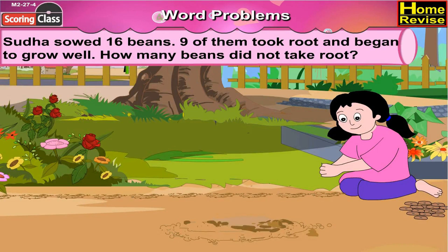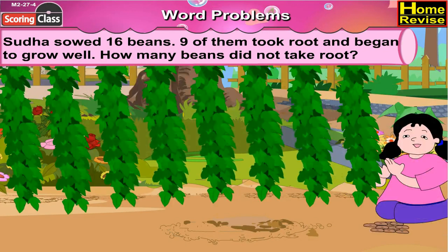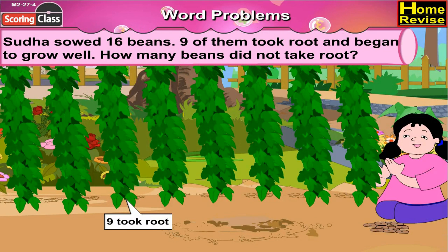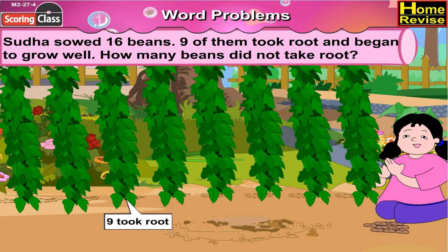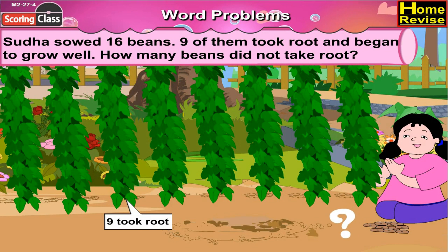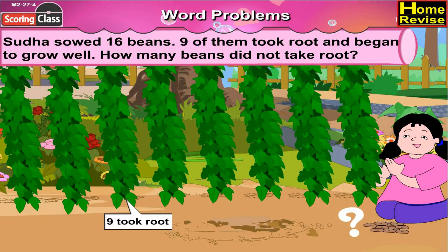Sudha sowed 16 beans. 9 of them took root and began to grow well. How many beans did not take root?